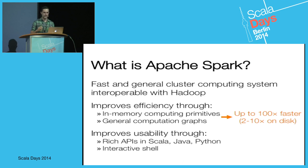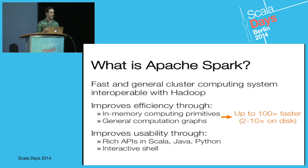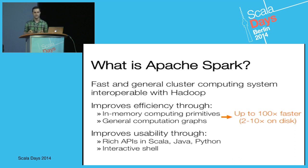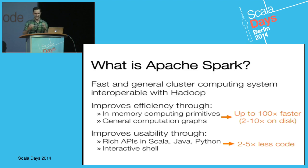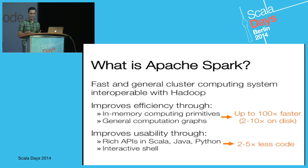It can actually be 2 to 10 times faster even if your data doesn't fit in memory. In contrast to the very simple map and reduce APIs, we improve usability by having richer APIs in Scala, Java, and Python. We also support an interactive mode. Instead of writing programs, you can sit down in the shell and write commands against Spark — and for most tasks, it's 2 to 5 times less code than a typical Hadoop system.